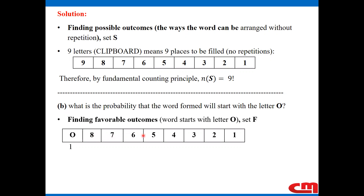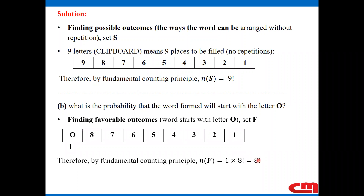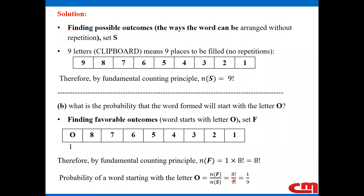The first position is fixed as O, so the choice there is one. How many are left? Eight. You go on and on until the last position. By the fundamental counting principle, the number of favorable outcomes is one times eight factorial, which reduces to eight factorial. Now I have the possible outcome and the favorable outcome. The probability of a word starting with the letter O is eight factorial over nine factorial, which simplifies to one over nine. This is the approach to use for problems involving word arrangements.